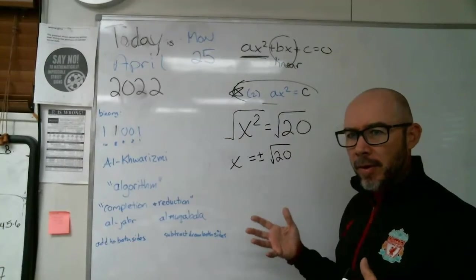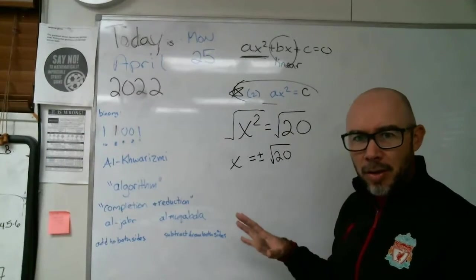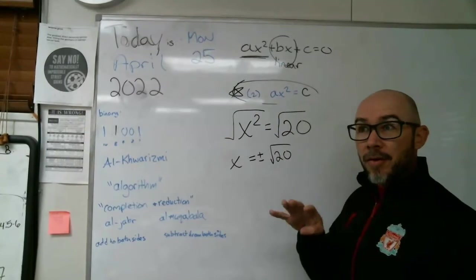Okay. Do some factoring of 20 and then just leave it with irrational stuff in there with the square root. So 20 is four times five.